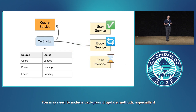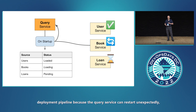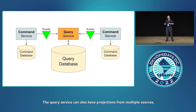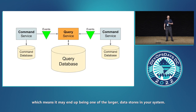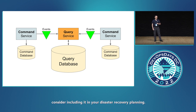You may need to include background update methods, especially if you're running in a managed cluster environment or as part of a deployment pipeline, because the query service can restart unexpectedly. You can store the status right in the query service itself. The query service can also have projections from multiple sources, which means it may end up being one of the larger data stores in your system. So if it takes a long time to repopulate, consider including it in your disaster recovery planning.